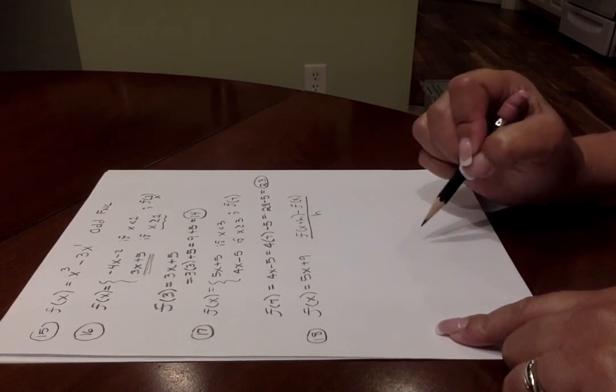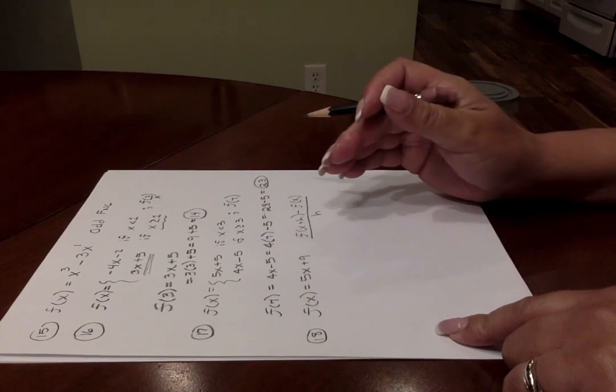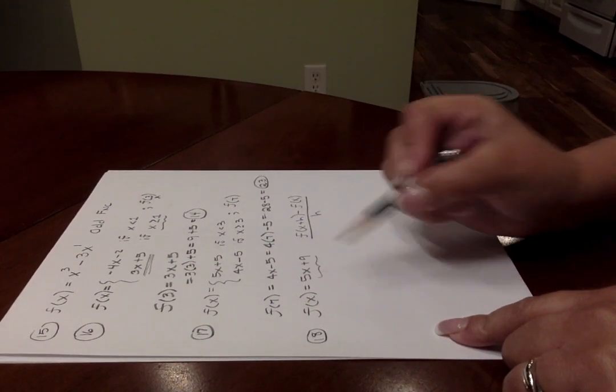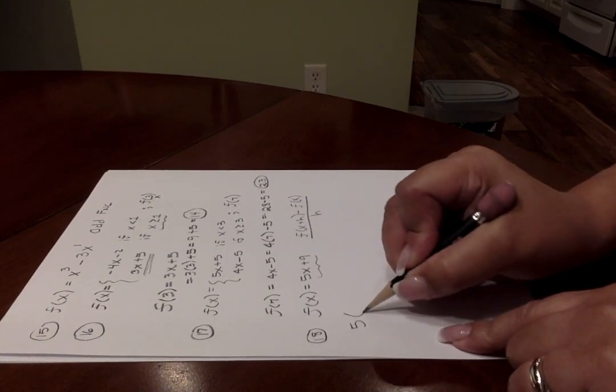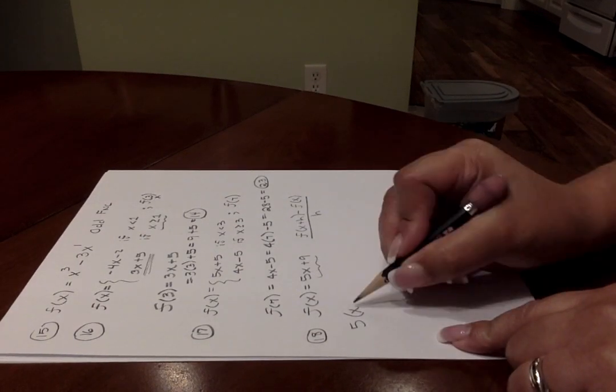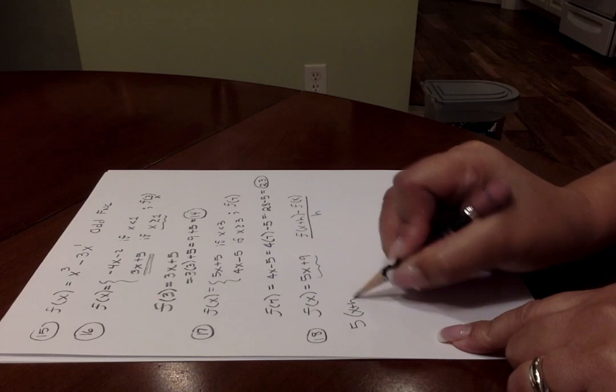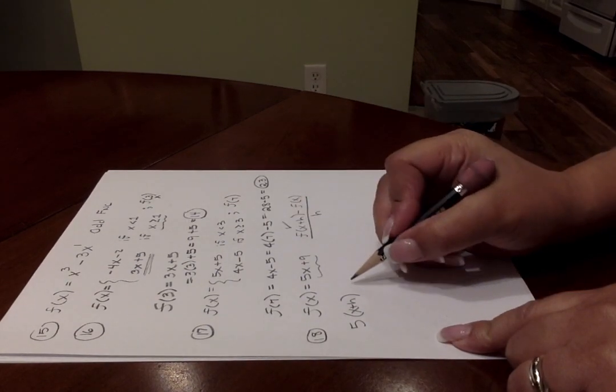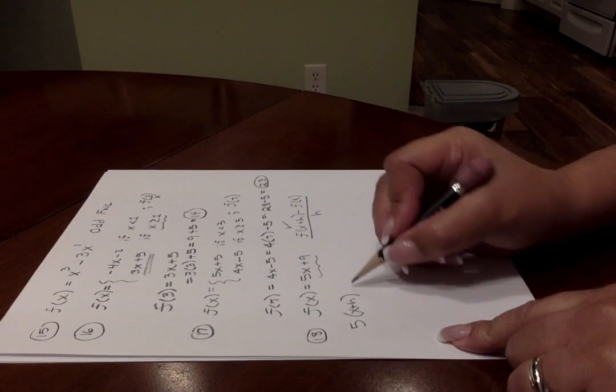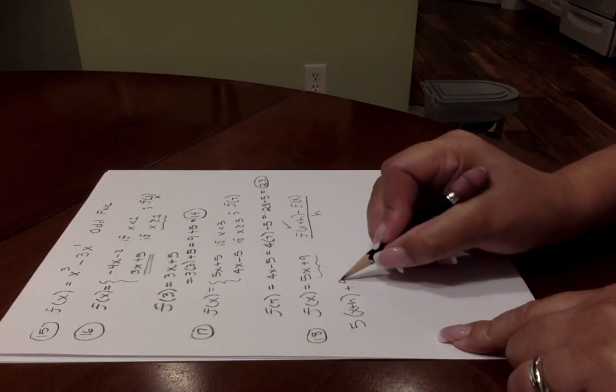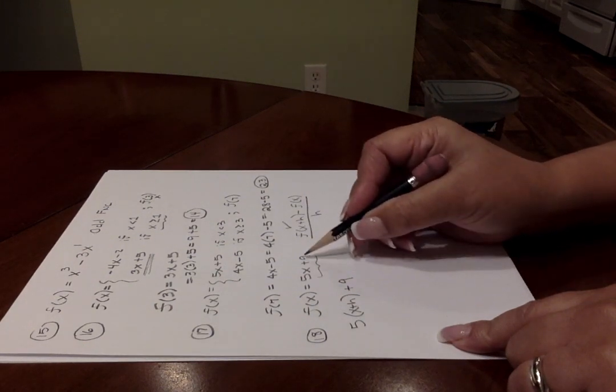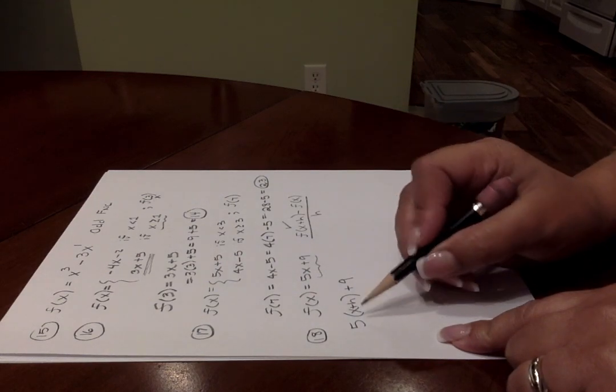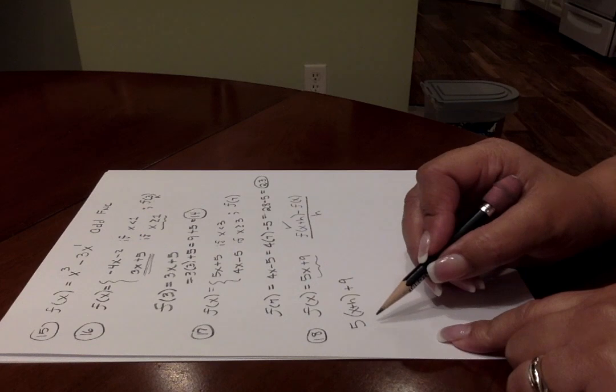This says, take your function, this is your function, plug in X plus H. You've got to know how to read this formula. Take the function, plug in X plus H. This is what you're plugging into. So it's 5 times and where there's an X, you're plugging in X plus H. Then it says, you want to write this entire function, plugging in X plus H as it indicates here, just where the X is.